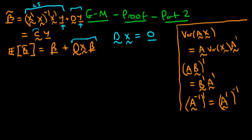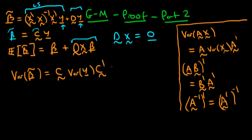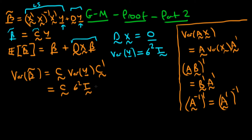Using our form beta tilde = CY, we can write that the variance of beta tilde is equal to C times the variance of Y times C transposed. If we assume homoskedasticity, the variance of our dependent variable Y is equal to sigma squared times the identity matrix I. Under that assumption, the variance becomes C times sigma squared times I times C primed, which simplifies to sigma squared times C times C transposed.